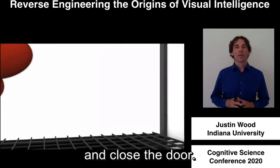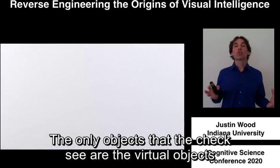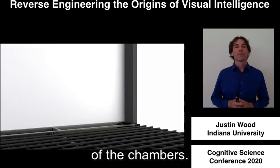As you can see, these environments are strictly controlled. The only objects that the chicks see are the virtual objects that we project on monitors situated on opposite sides of the chambers. So we have complete control over all of the chicks' visual experiences with objects.